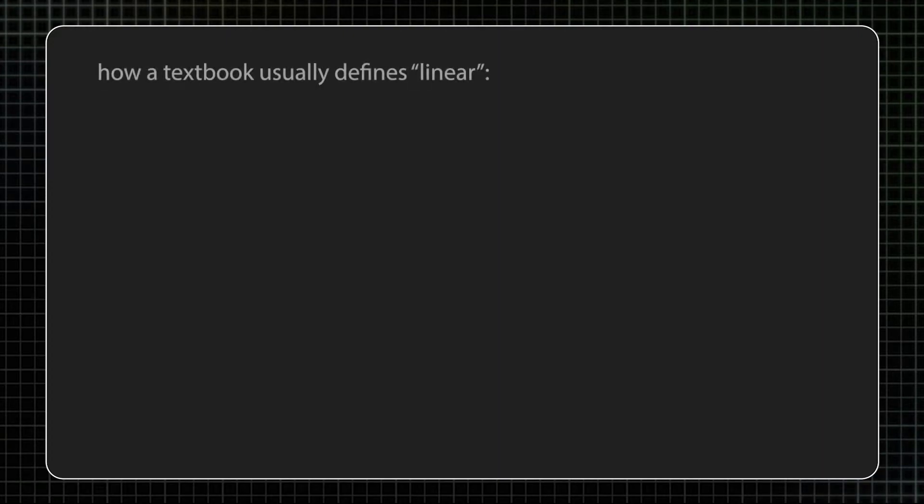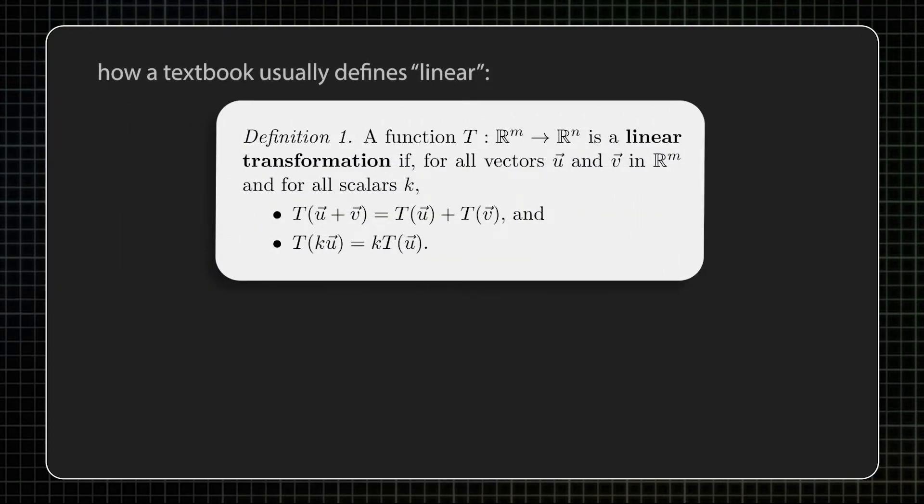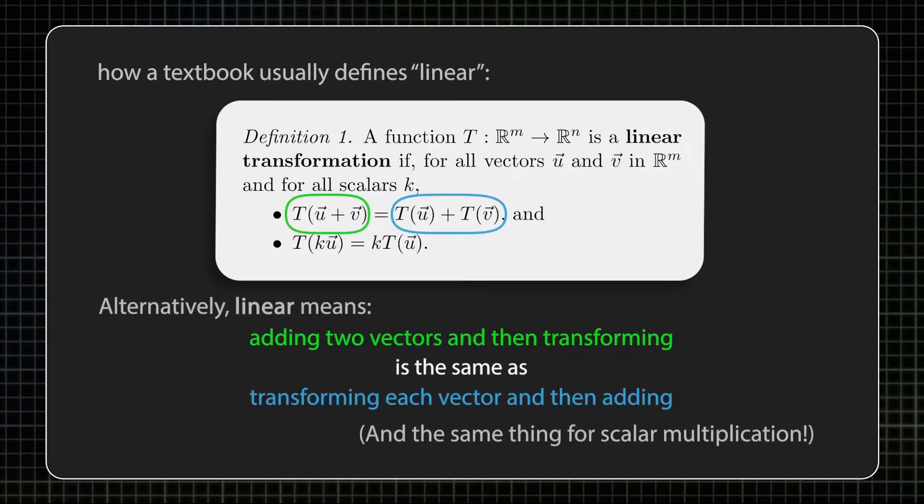But why are linear transformations called linear? What does linear even mean? Well, here's the textbook definition of linear when we're talking about functions. In words, a linear transformation is a function that preserves vector addition and scalar multiplication.